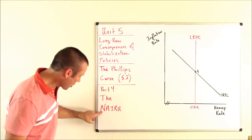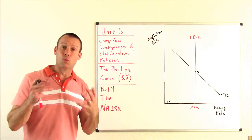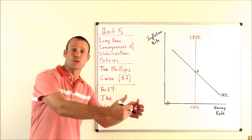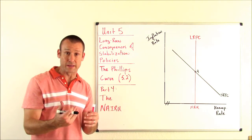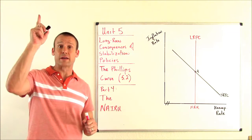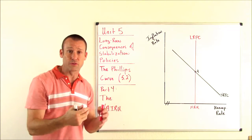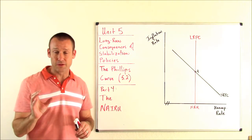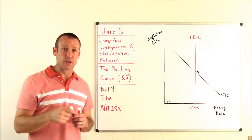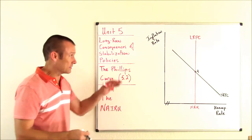The non-accelerating inflation rate of unemployment — what is that? It is the lowest the unemployment rate can get without the inflation rate starting to accelerate upwards. It is the lowest the unemployment rate can be without inflation beginning to accelerate.